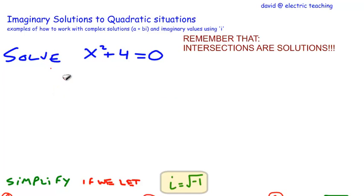Hopefully a little bit of why we deal with them. Let's start by just an example problem of where this occurs. How about this one x squared plus 4 equals 0. Remember that intersections are solutions. So the first thing I want you to do is get a visual of what this means.